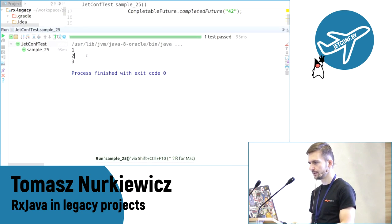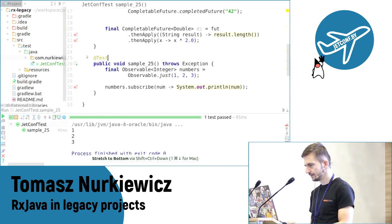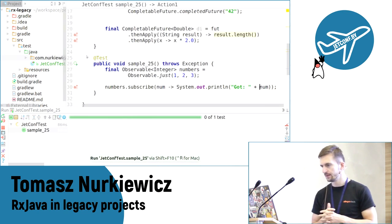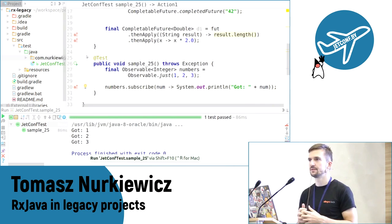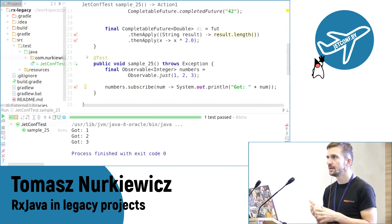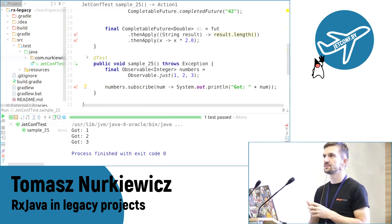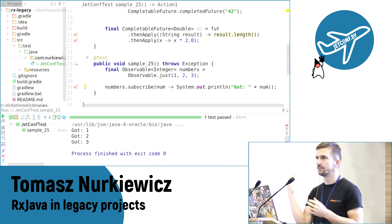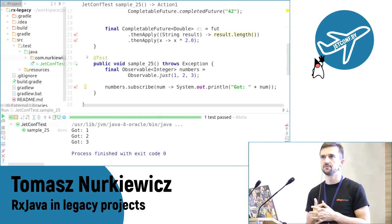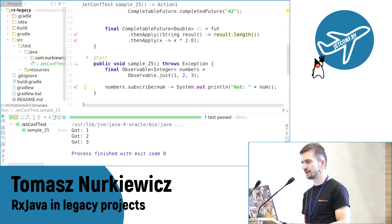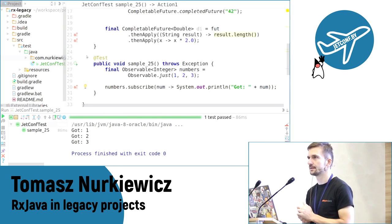Let's run it. I got 1, 2, and 3. Just to prove it actually works, let's put something like 'got' and run it again. So this is a very simple stream that throws three numbers. In general, you would get more complex streams representing data coming from the network, from the file system, from JMS, whatever — this is just to familiarize you with the syntax.